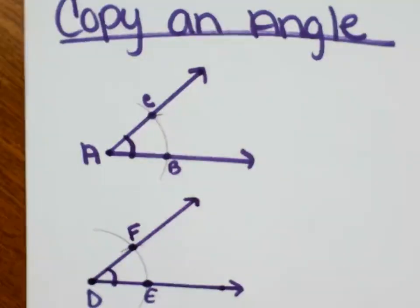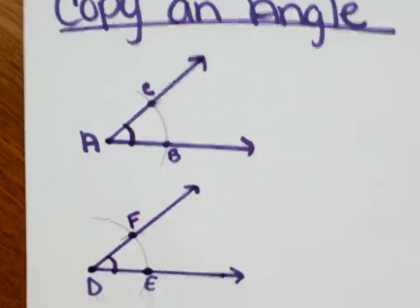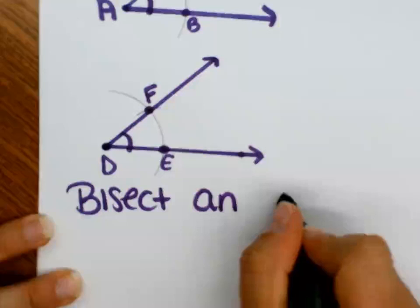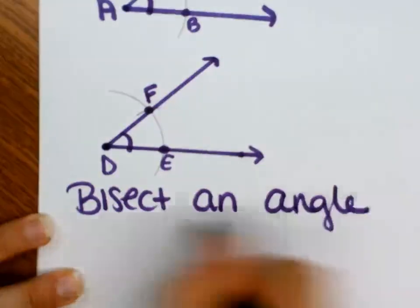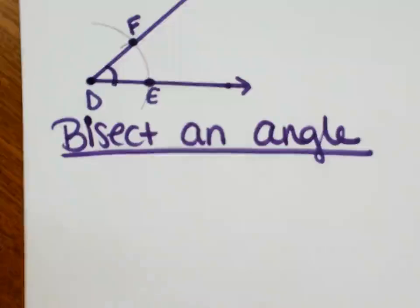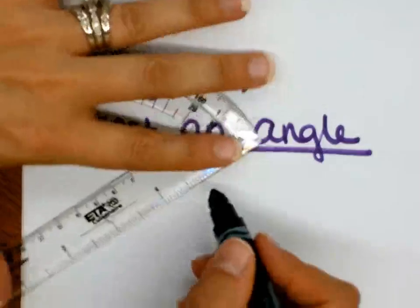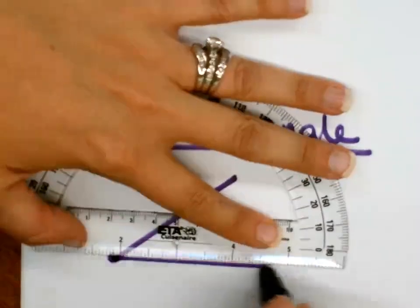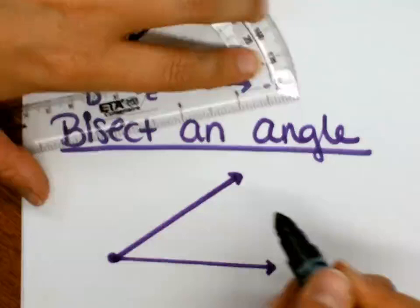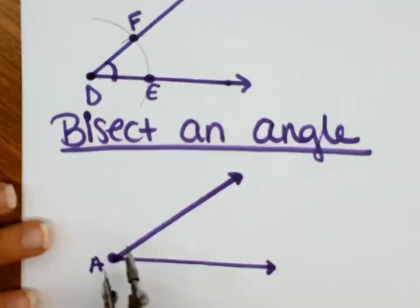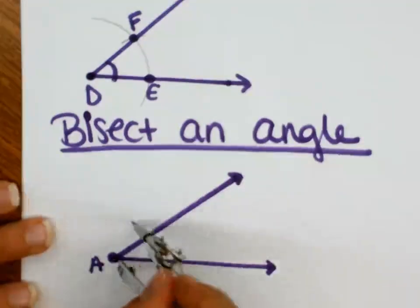What if I wanted to bisect an angle? So we need to start with an angle. We'll call this angle A. So in order to bisect angle A, put the sharp part on the A, make an arc.